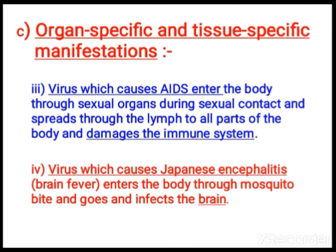Japanese encephalitis is a brain fever — it enters the body through a mosquito bite and infects the brain. Each microorganism focuses on and damages a particular organ according to the toxin it produces. If the toxin is more toxic, it may severely damage the organ; if less toxic, it may cause an acute or chronic disease depending on the severity of the attack.